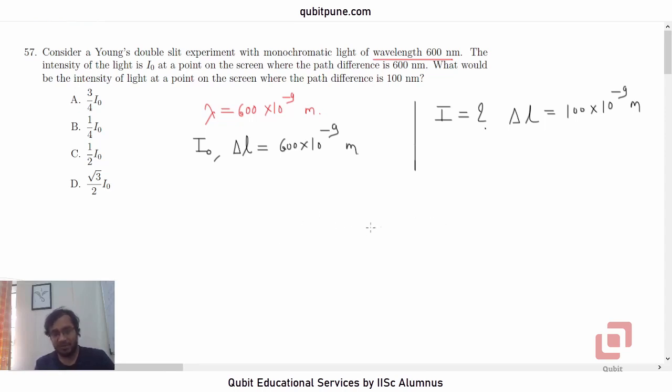First thing is the formula that connects the path difference with the phase difference. Suppose delta phi is the phase difference. What is the formula that connects path difference and phase difference? The formula is delta phi equals 2 pi by lambda into delta L. This is the first main formula required for the problem. Phase difference delta phi equals 2 pi by lambda into the path difference delta L.